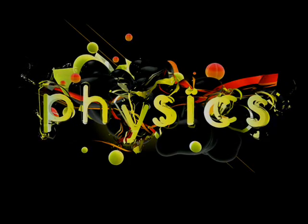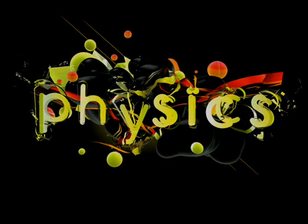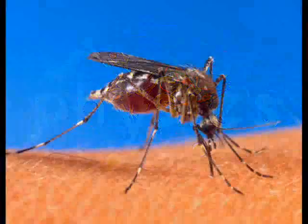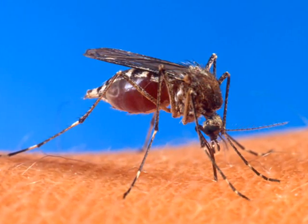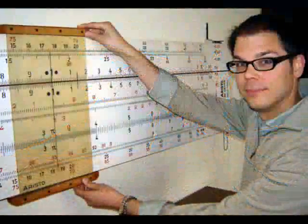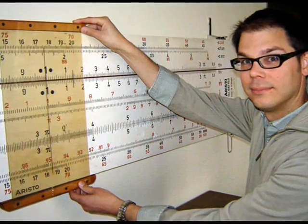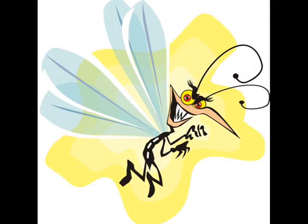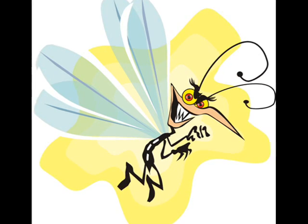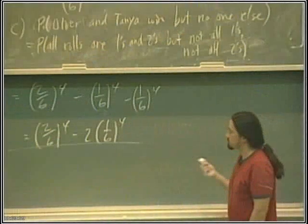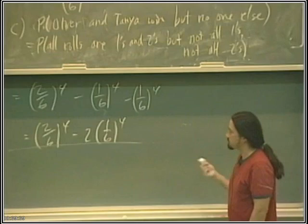For now, let's look at the mundane nature of the improbable. A mosquito landed on my arm today. Now, everyone take out your slide rule and calculate the chance that one particular mosquito in one particular city on one particular day would land on my particular arm. It doesn't take a mathematician to know that the chance is highly improbable. Yet it happened.